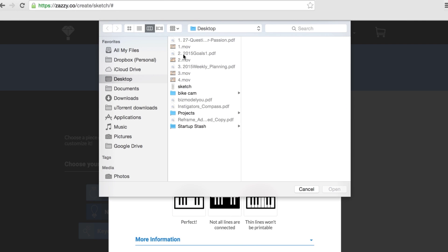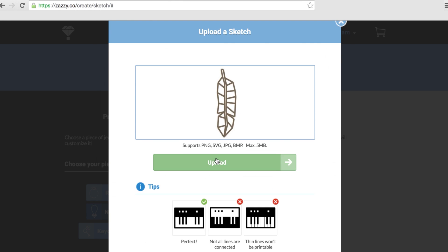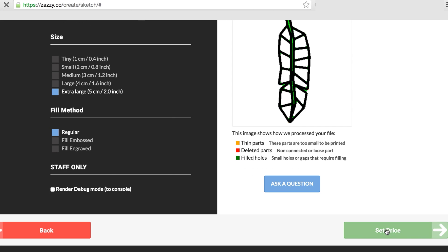After sketching your custom design, you just upload your sketch into the editor, choose the type of product you want to create, pick the materials, and off you go.